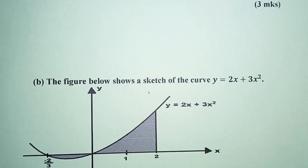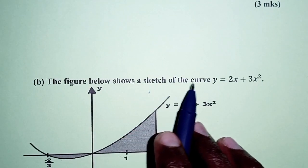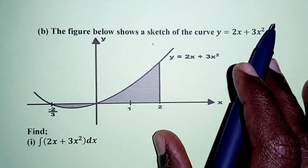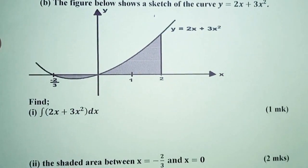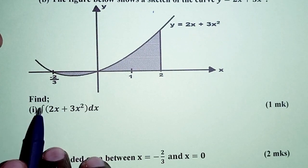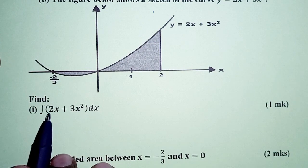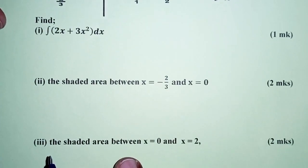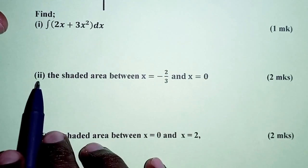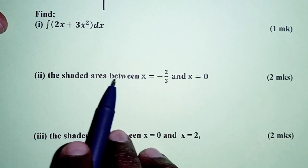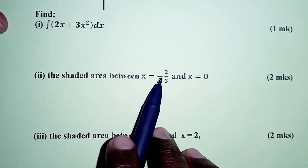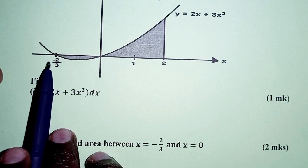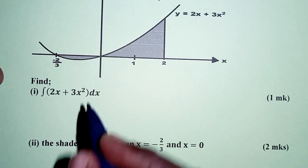Then part B. The figure below shows a sketch of the curve y equals 2x plus 3x squared. Roman 1: find the indefinite integral of 2x plus 3x squared with respect to x. Roman 2: find the shaded area between x equals negative 2 over 3 and x equals 0, as shown in the diagram.